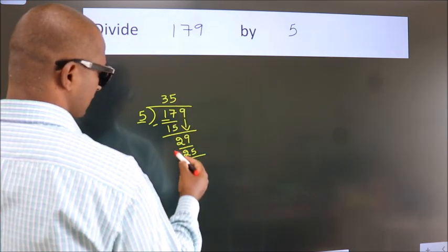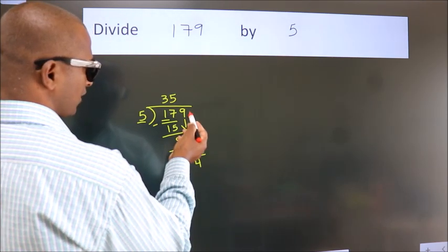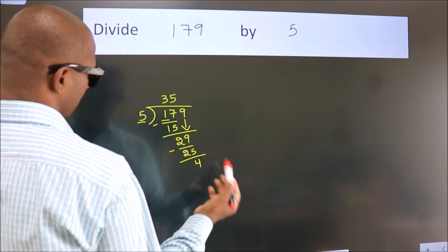Now we subtract. We get 4. After this, no more numbers to bring down. So what we do is, we put a dot and take 0. So 40.